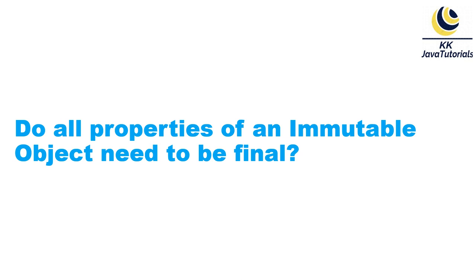When we talk about immutability in Java, there is a set of rules you need to follow to make a class immutable. First of all, we need to declare the class as final, so that no other class can subclass it and try to change the state of the object.